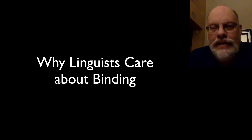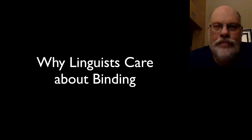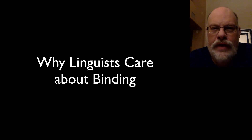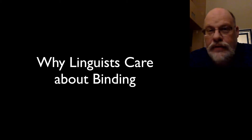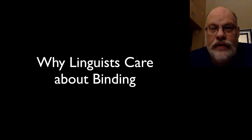Binding theory takes a little bit to wrap your mind around: being bound, being free, the fact that binding is a complicated relationship of C-command and co-indexing, the notion of binding domain, and the three different kinds of nouns that are governed by principles A, B, and C.